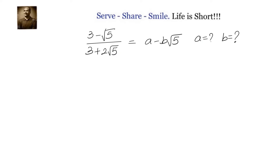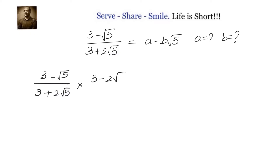I will be using the concept of rationalization of denominator to solve this problem. So, let us write down what is given: 3 minus root 5 divided by 3 plus 2 root 5. To rationalize this, we have to multiply with its conjugate, that is 3 minus 2 root 5 divided by 3 minus 2 root 5.